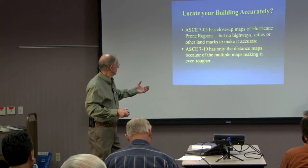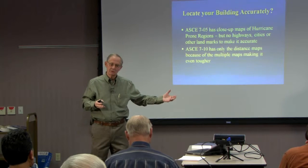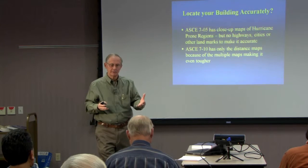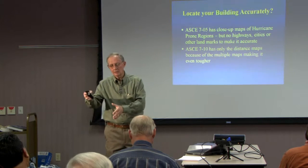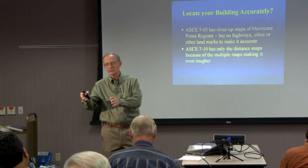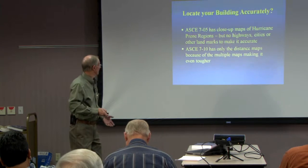The 10 version only has the distance map. In other words, you're going to have half of the U.S. on one map. It shows the counties across, but it doesn't show the state lines, it doesn't show highways. It's getting more difficult. But if you showed all the blow-up areas, you'd end up with three maps plus the blow-up areas as well — a lot of maps in ASCE 7.